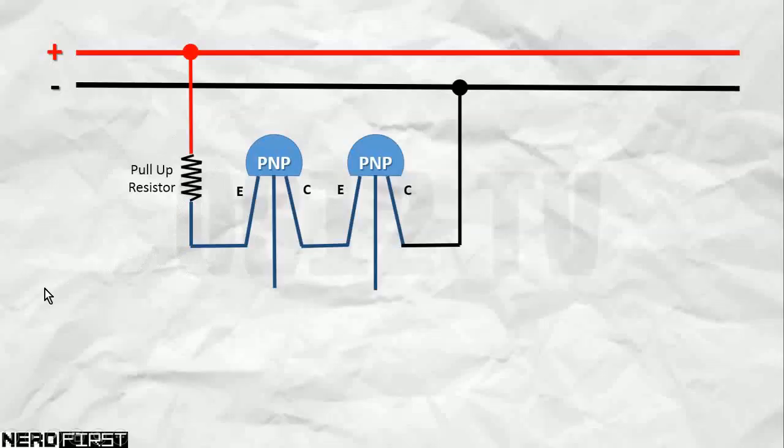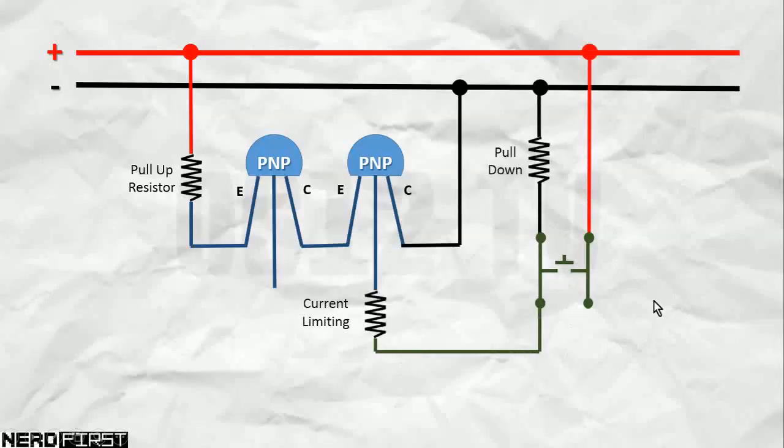Now, what we're going to do is we're going to introduce our two buttons into the mix. Let's look at just one first. We are, of course, going to have to give our push button a little bit of power and make a connection over to the base of one of our transistors through a current limiting resistor. When the switch is open, this connection here at the base is pulled down to low.